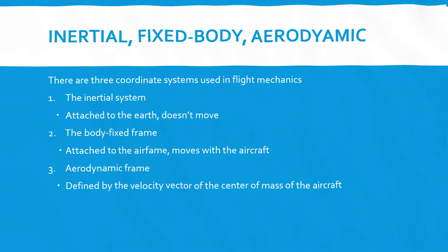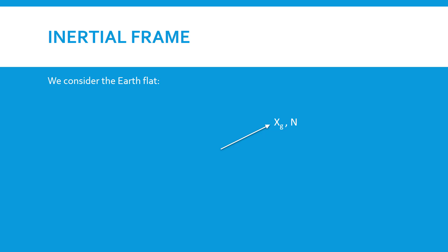We'll start with the inertial frame. We consider the earth flat, and we have to orient the three coordinate directions in specific directions. Arbitrarily, XG, which is the ground-fixed coordinate system, faces north.